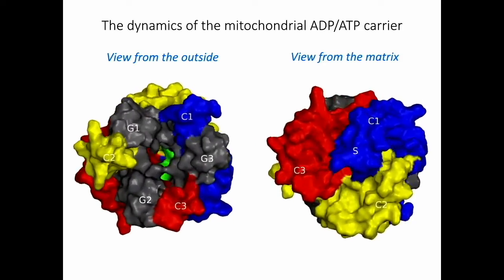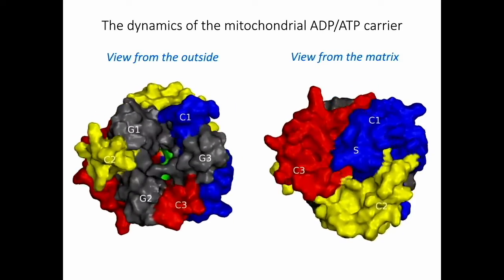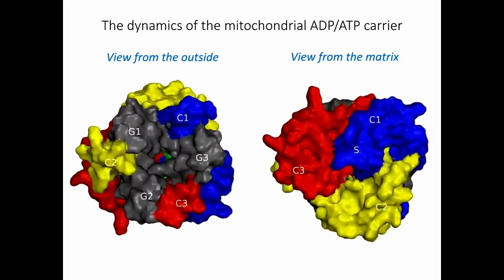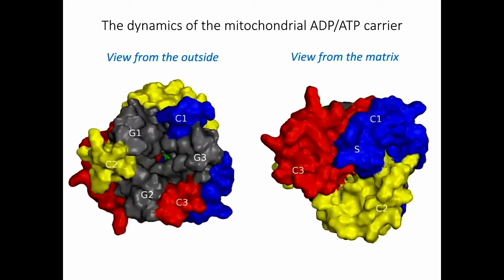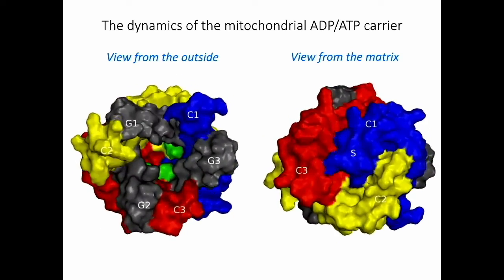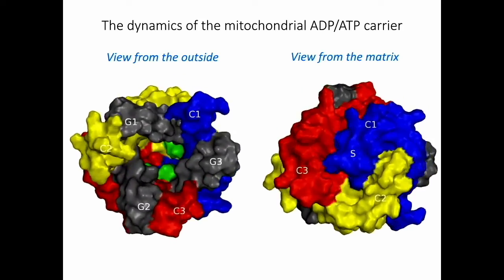There are three gate elements, shown in grey, that regulate opening and closing of the cytoplasmic side of the carrier. And there are three core elements, shown in primary colors, that regulate opening and closing of the matrix side.